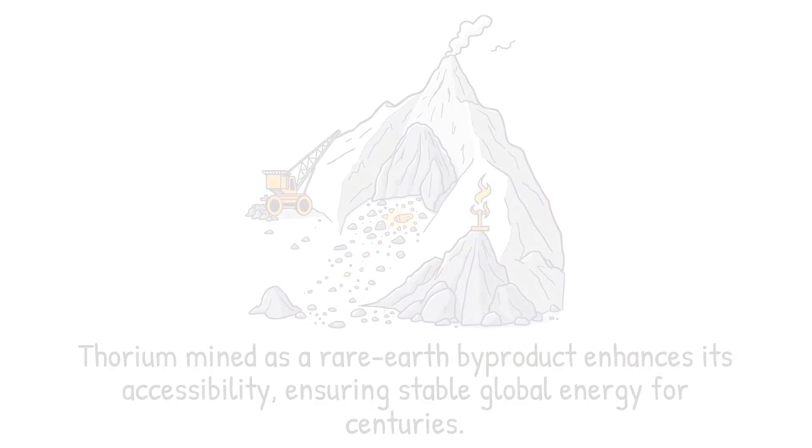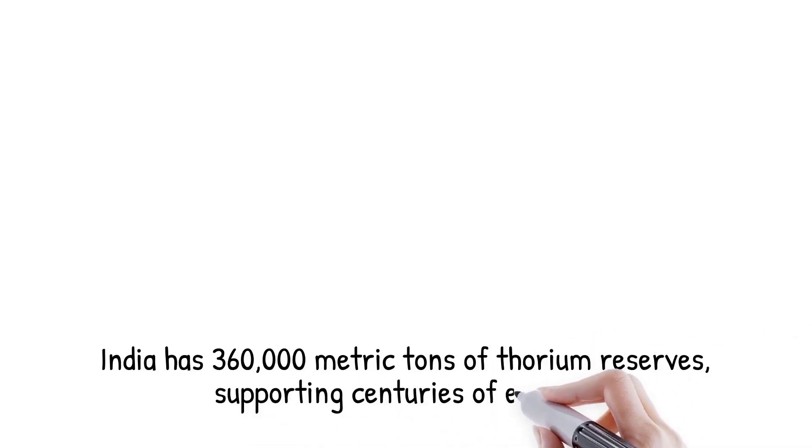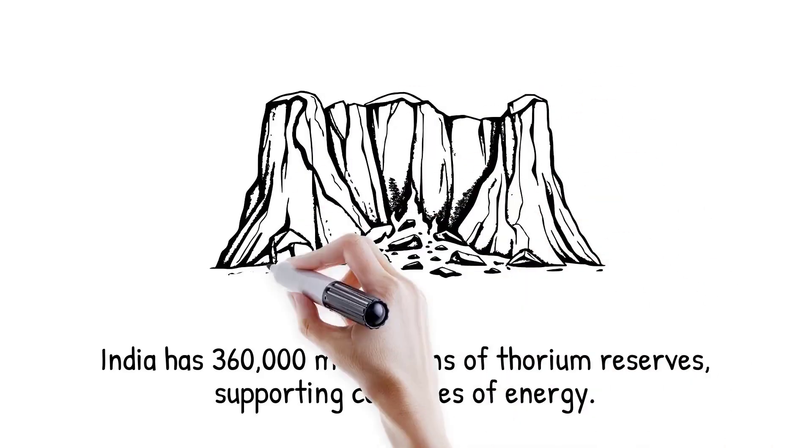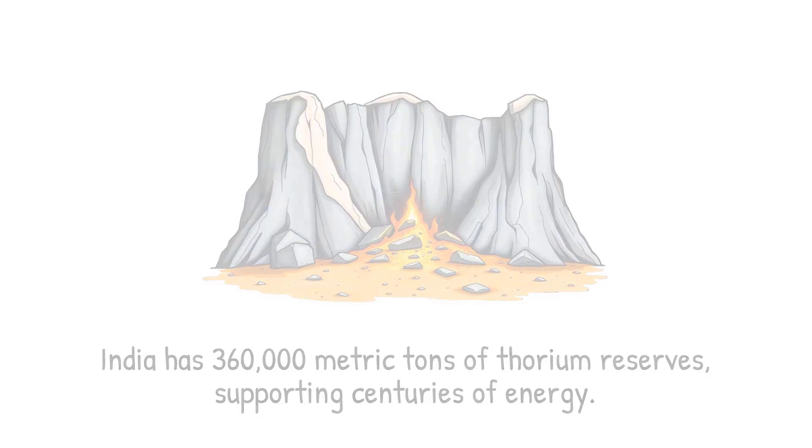For example, India's thorium reserves are estimated to be around 360,000 metric tons, enough for centuries of power generation. Analogy: thorium is like fresh water. Widely available and more evenly distributed compared to scarce uranium wells.